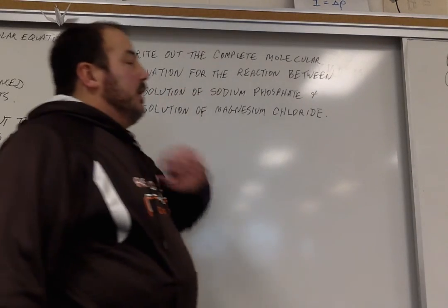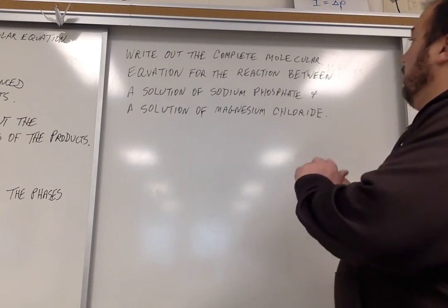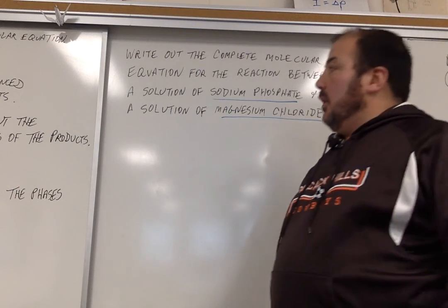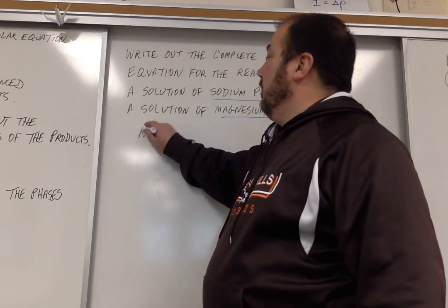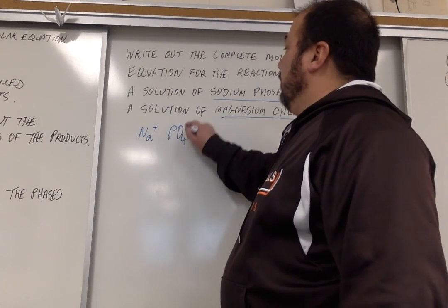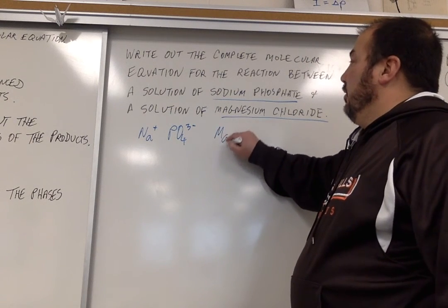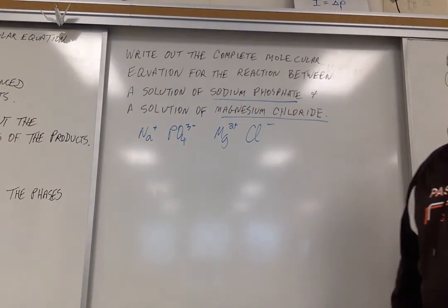Like I said, we want to write out the equation for the reaction between sodium phosphate and magnesium chloride. I recommend the first thing is that you identify your ions. Sodium, that's an Na+ ion. Phosphate, that's a PO4^3- ion. Magnesium, that's an Mg^2+ ion. Chloride, that's a Cl- ion.